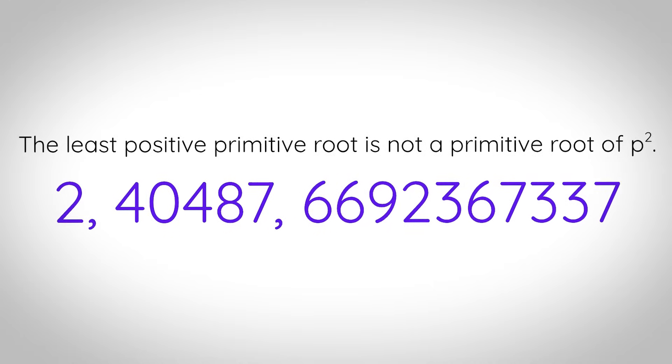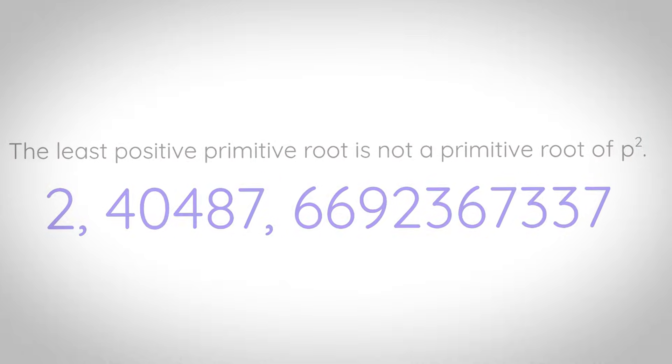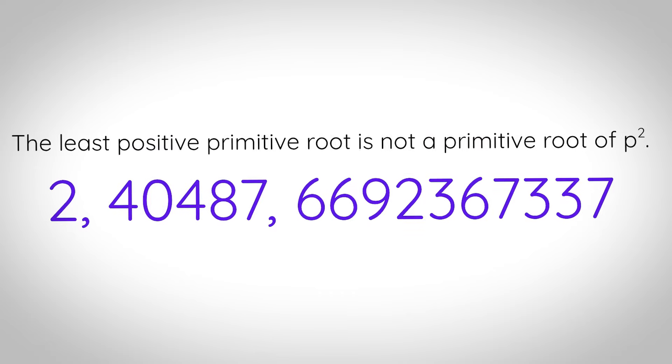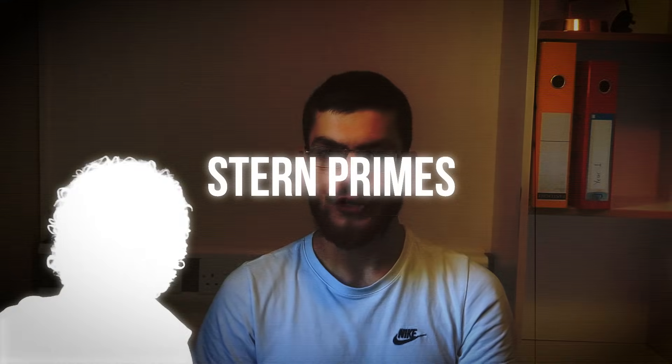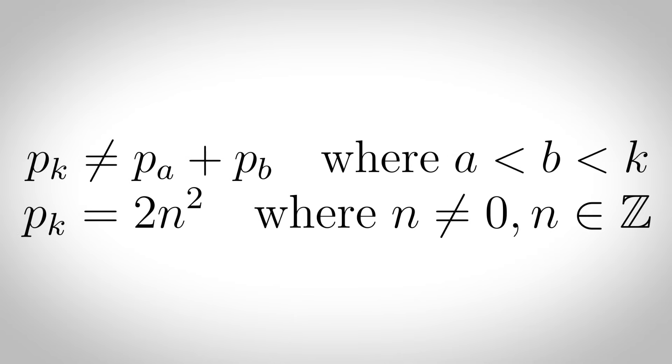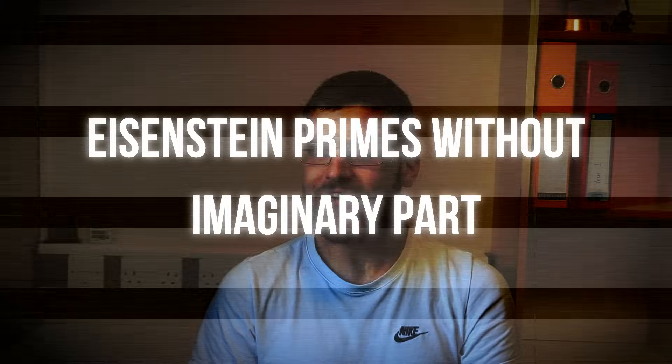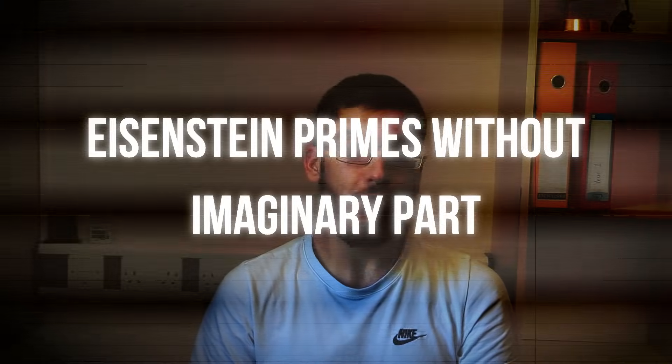The three known non-generous primes are 2, 40487, and 6692367337. Stern primes: primes that are not the sum of a smaller prime and twice the square of a non-zero integer. This is so oddly specific that it makes me wonder why anyone ever bothered to name this. Eisenstein primes without the imaginary part: Eisenstein integers that are irreducible and real numbers.